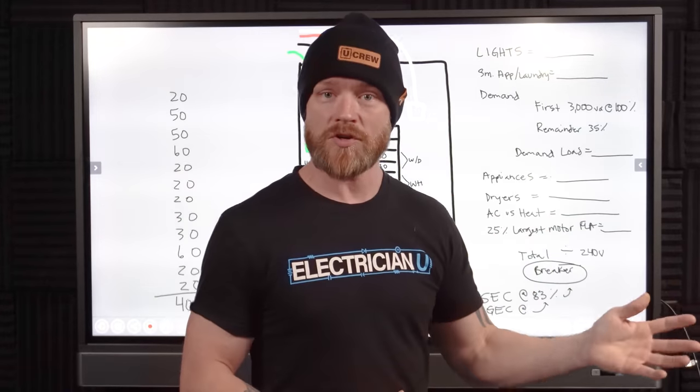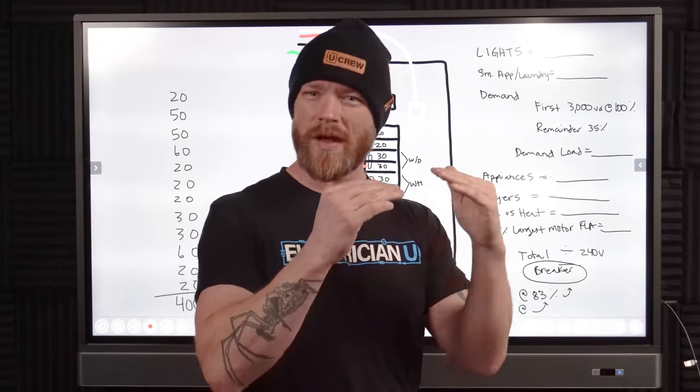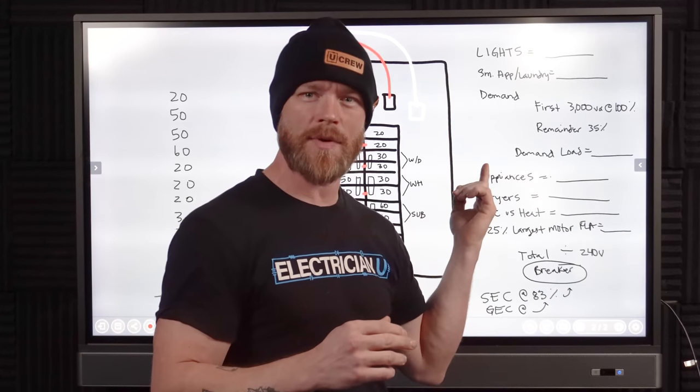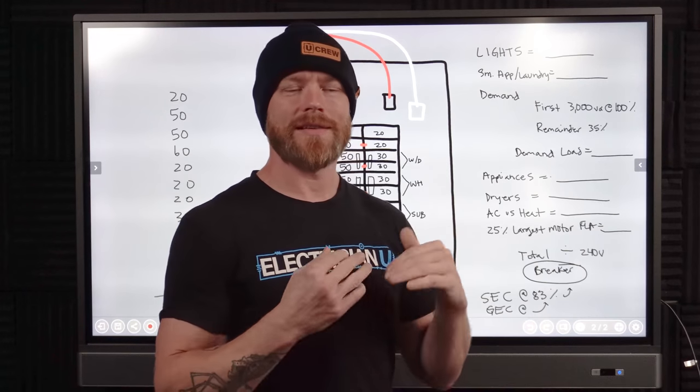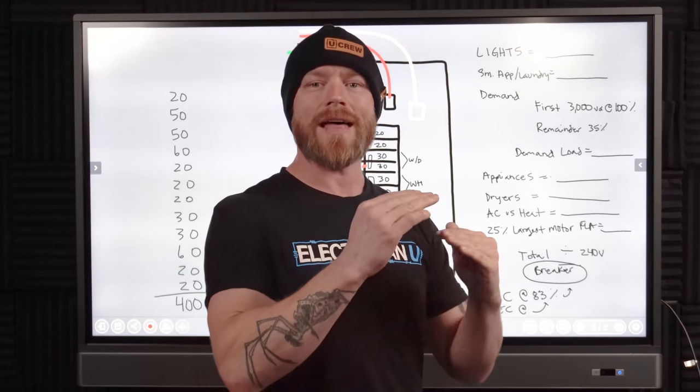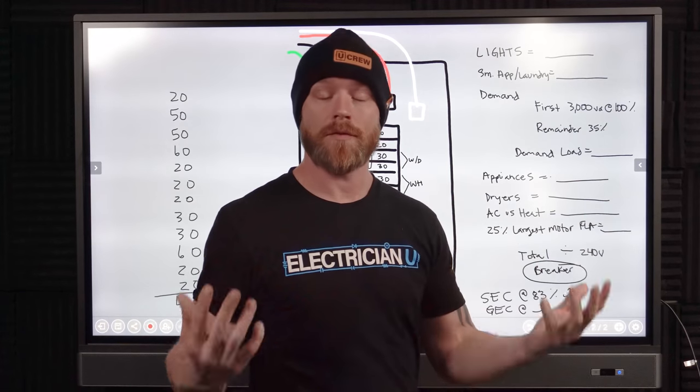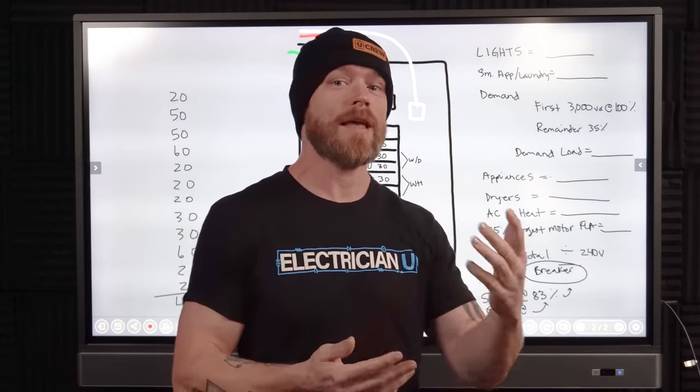So instead of just adding everything together in code, we have this really difficult thing called the standard method. There's also an optional method, much quicker. It's not quite as accurate. So it's going to spit out a relatively close number as the standard method would. It's just faster. It's a little sloppier, but it's still okay per code. So even that little discrepancy in size is okay. But doing both of the different methods, what it affords us to do as electricians is save money.